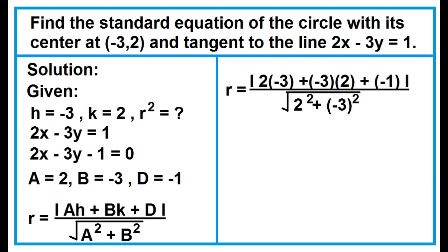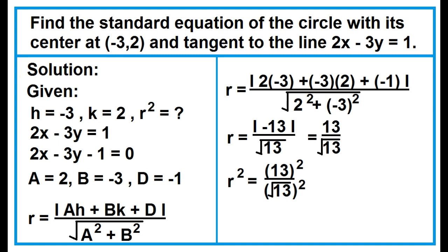Substituting the given values: r equals the absolute value of 2 times negative 3, plus negative 3 times 2, plus negative 1, all over the square root of 2 squared plus negative 3 squared. Simplifying: r equals the absolute value of negative 13 over the square root of 13, which equals 13 over the square root of 13. Squaring both sides gives r squared equals 169 over 13.